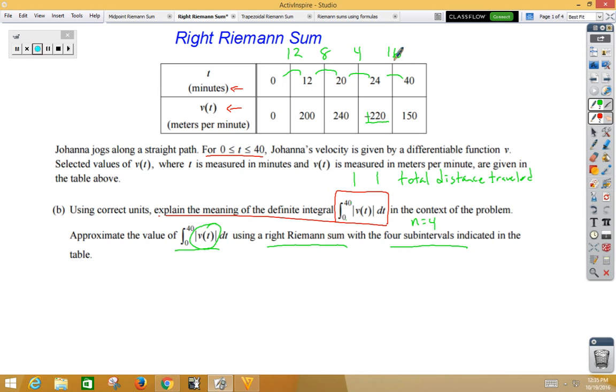In a right Riemann sum, never use the first height value. Remember, this is like base and this is like height. And let's start writing our rectangles. Our first rectangle would be 200 times 12. Our second rectangle would be 240 times 8. Our third rectangle would be 220 times 4. And our final rectangle would be 150 times 16.